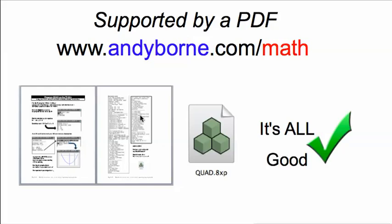As always, this program is supported by a nice little PDF, an 8XP file, and you can find these by going to andybourne.com/math. They are here for you, so you can look at the code listing and see the example, and you don't have to type in this program. You can download it and install, or if one of your friends already has this on their calculator, you can use the link program and a cable and just copy it.